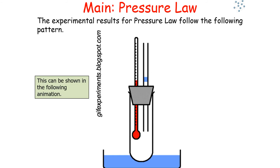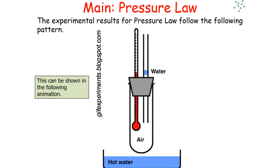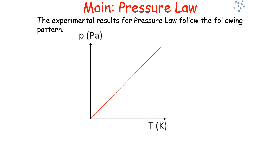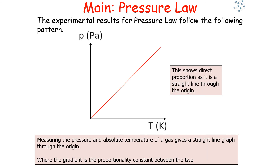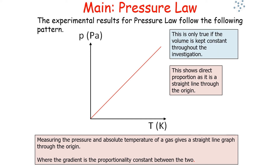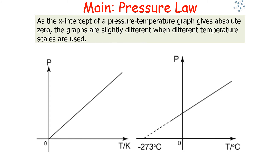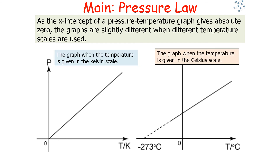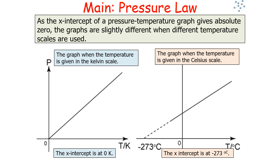The experimental results for the pressure law show P plotted against T as a straight line through the origin, where the gradient is the proportionality constant between the two. This confirms P and T are in direct proportion, but only if the volume is kept constant throughout the investigation. As the x-intercept of a pressure-temperature graph gives absolute zero, the graphs differ slightly depending on temperature scale: zero Kelvin on the Kelvin scale, and minus 273 degrees Celsius on the Celsius scale.